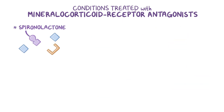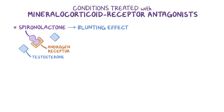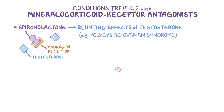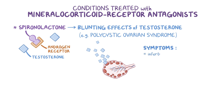Spironolactone can also bind to androgen receptors and prevent testosterone from binding, making it useful for blunting the effects of testosterone in conditions like polycystic ovarian syndrome, where cysts on the ovaries secrete excess testosterone. This can result in symptoms like infertility, hair loss, acne, hirsutism, or unwanted facial hair growth.